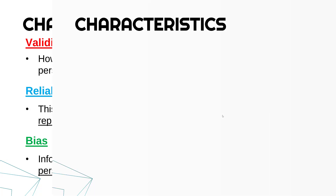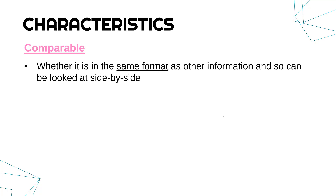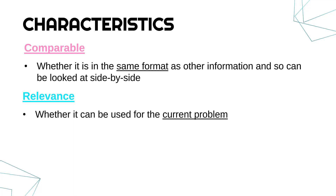A few more relevant characteristics: whether the information is comparable. If information is comparable it means it's in the same format as other information you already have, so you're able to look at it side by side and make direct comparisons. If you've got a big database already and the new information is in a completely different structure and format, you might have to spend a long time converting it. So if you're looking for high quality information, ideally it will be comparable to what you have already.